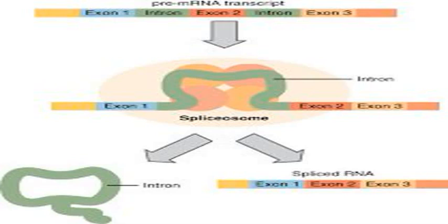The existence of mRNA was first suggested by Jacques Monod and François Jacob, and was subsequently discovered by Jacob, Sidney Brenner, and Matthew Meselson at the California Institute of Technology in 1961.